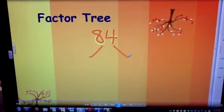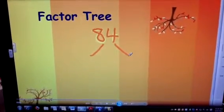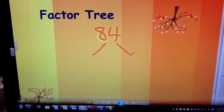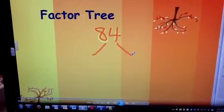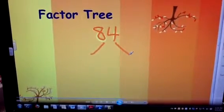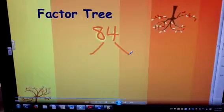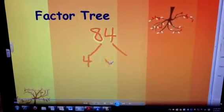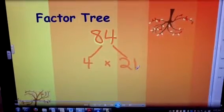Now, I find it best to start with the smallest prime number, two, and then work your way up, but you can break it down any way you feel comfortable. I can look at this one quickly, and I know that four goes into it 21 times, so I can even use four times 21 equals 84.